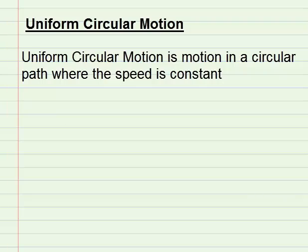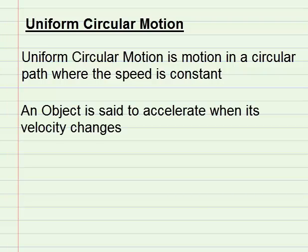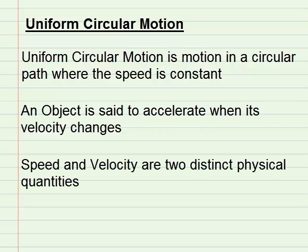We have seen that an object is said to accelerate when its velocity changes. We have also studied the difference between speed and velocity. Although the two terms are used as if they mean the same thing, the two physical quantities are distinct. We will start this lesson by reviewing the differences between them, which will enable us to understand that an object moving in a circular path with constant speed is said to be accelerating.